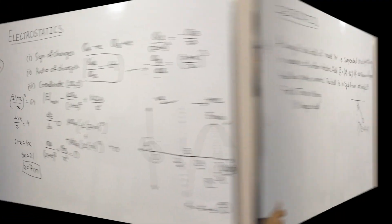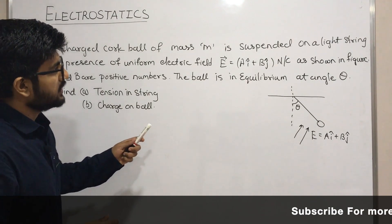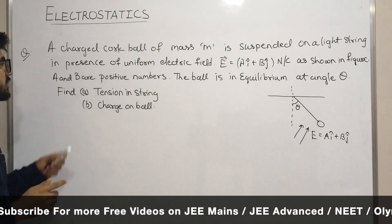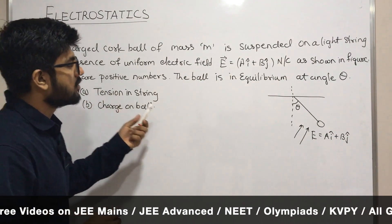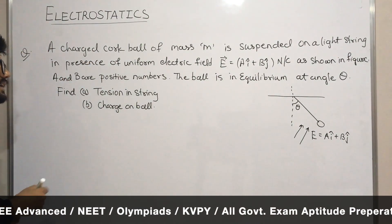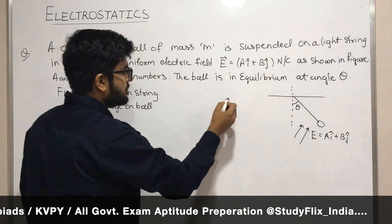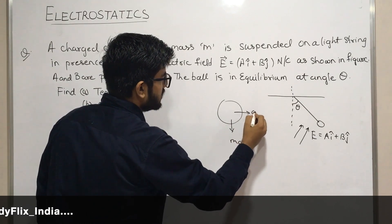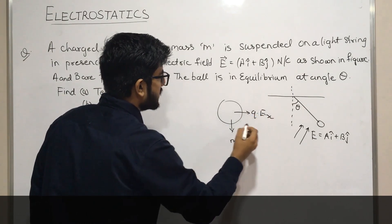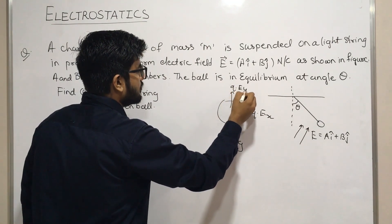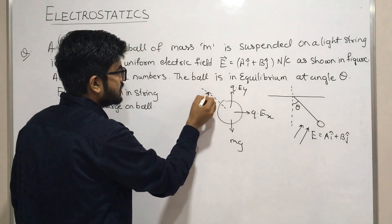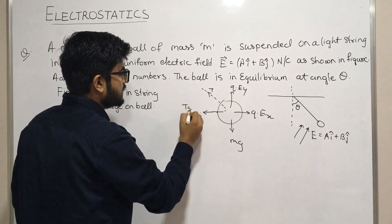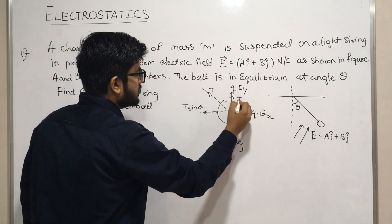Now let's take this question. A charged cork ball of mass m is suspended on a light string in the presence of a uniform electric field given as aî + bĵ, as shown in the figure — a and b are positive numbers. The ball is in equilibrium at angle theta. We will find the tension in the string and the charge on the ball. Let's draw the FBD of the ball.